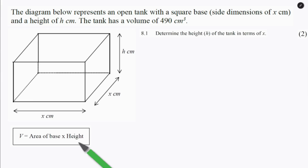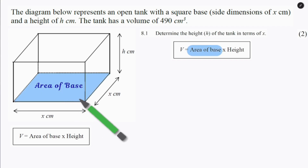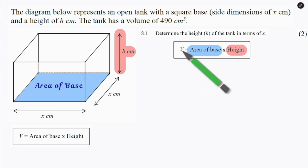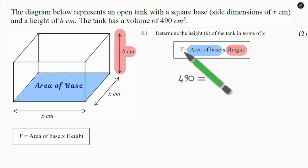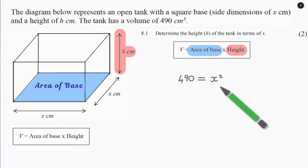The formula is the area of the base multiplied by the height. The base of our square-based prism is the square at the bottom, and the height is the dimension going up and down. We fill in the volume as 490. The area of the base is length times breadth, which is x times x, so the area of the base is simply x squared. And we multiply that by the height.